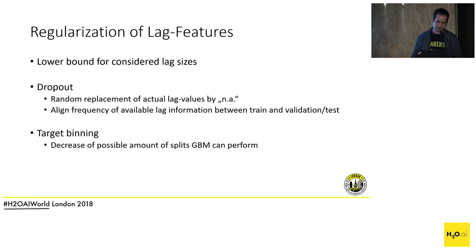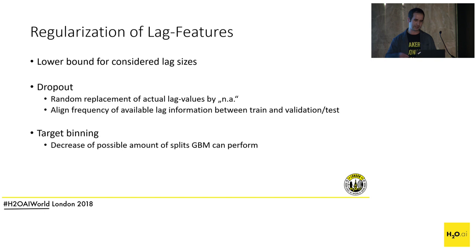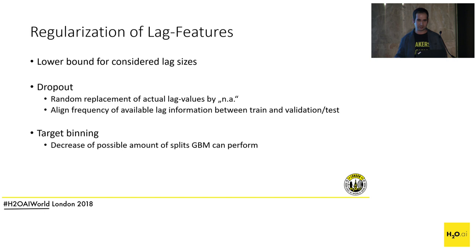Another strategy is: if you've created a lag of size one for the test data giving 75% NaNs, apply the same process to training by dropping out and aligning frequencies so you have exactly the same relative frequency of missing information in train as in test. The third strategy is dark target binning before lagging — instead of lagging the actual target, you lag binned values, which decreases the number of possible splits GBM can perform. Currently Driverless AI heavily relies on GBM for time series, which is why this strategy is implemented.